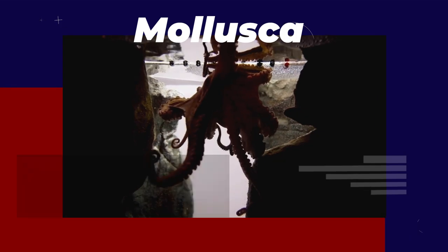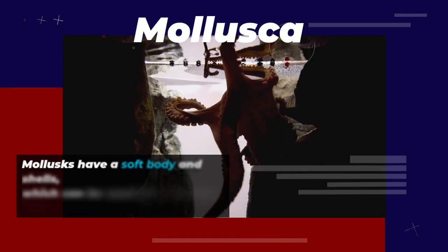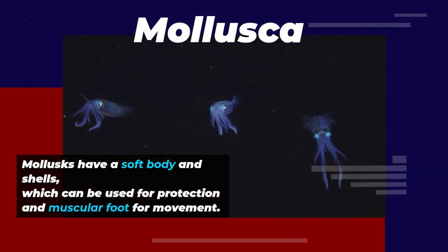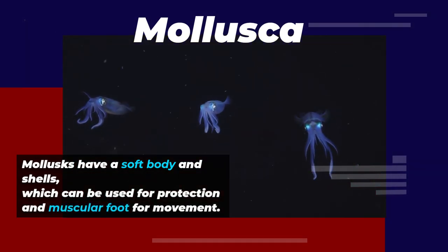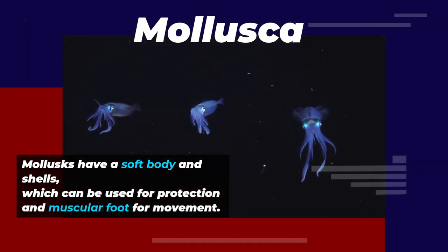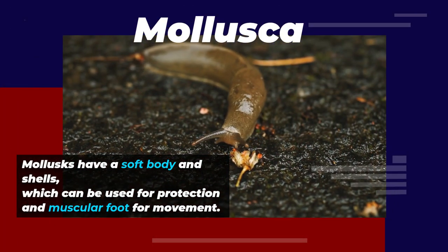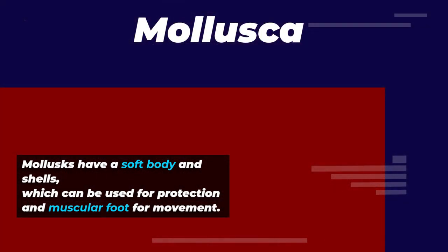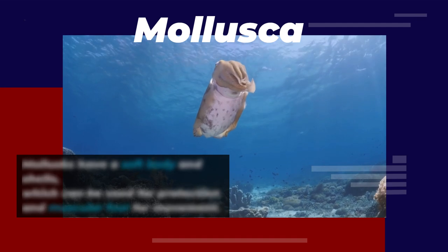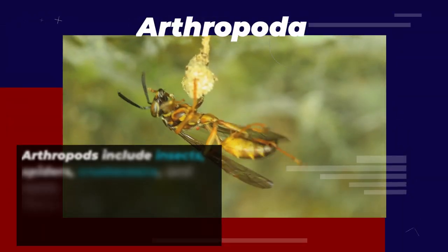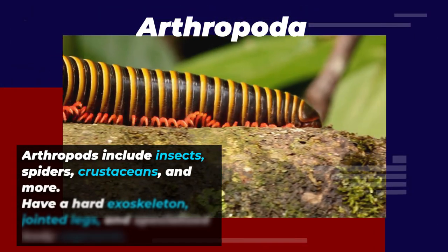The fourth phylum is Mollusca, which includes snails, clams, and octopuses. Molluscs have a soft body and a muscular foot for movement. Many have shells which can be used for protection. They have a complex digestive system and a well-developed nervous system.